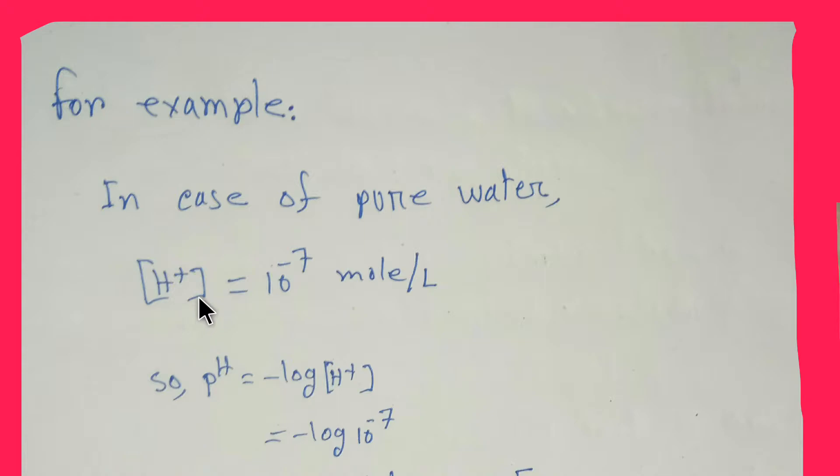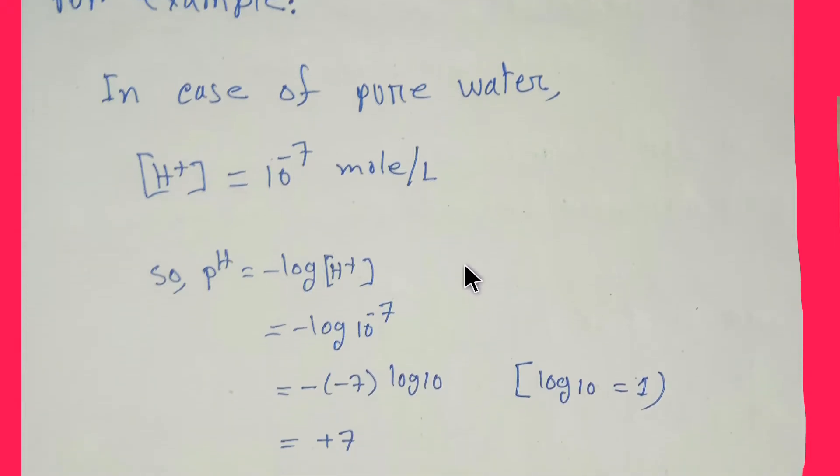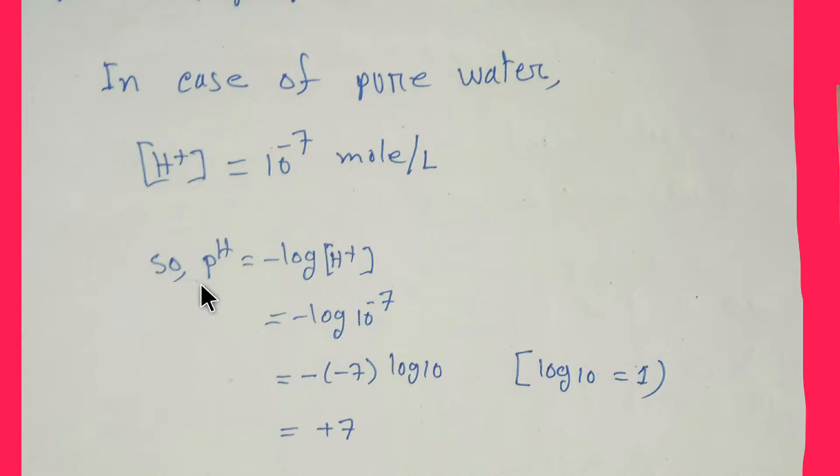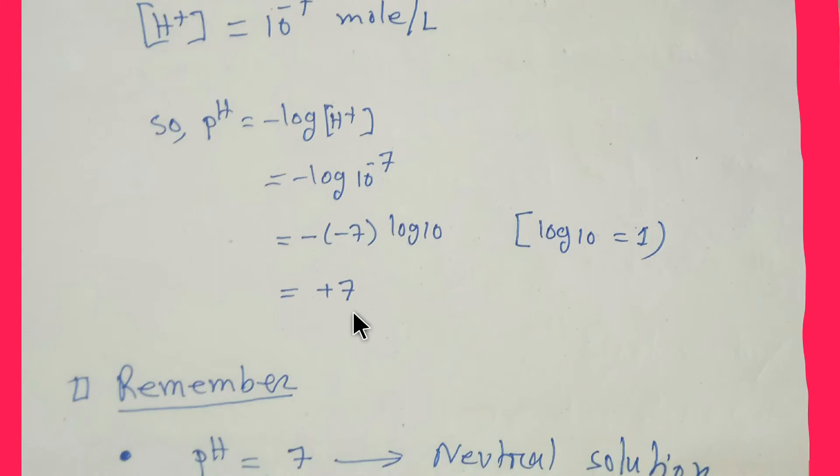In case of pure water, the hydrogen ion concentration is 10 to the power minus 7 mole per liter. If you use this equation and put the value of concentration of hydrogen ion, then you are getting 7.